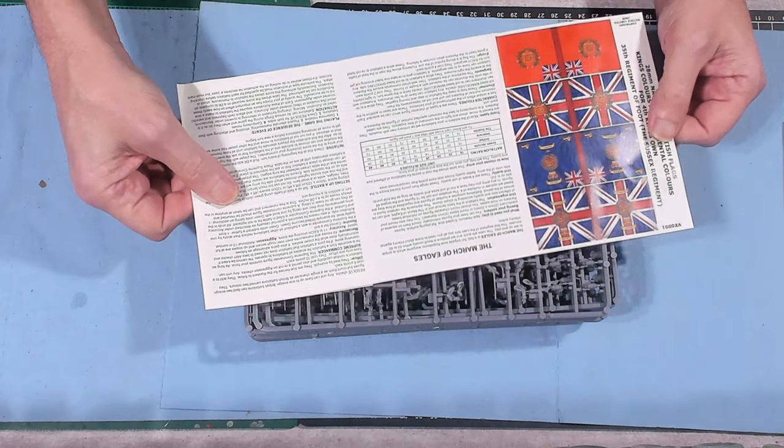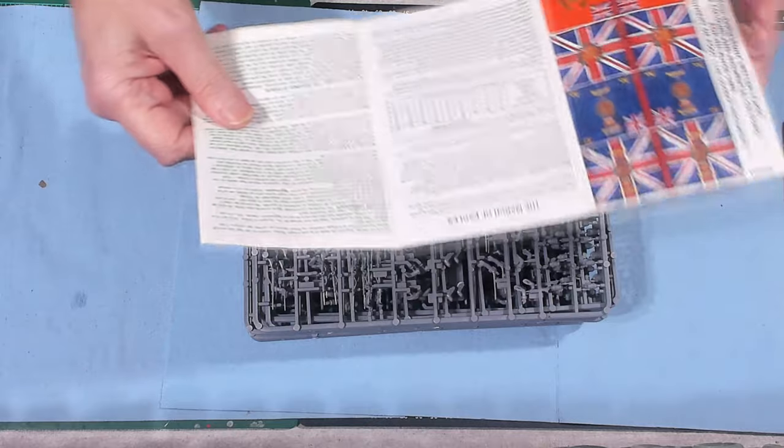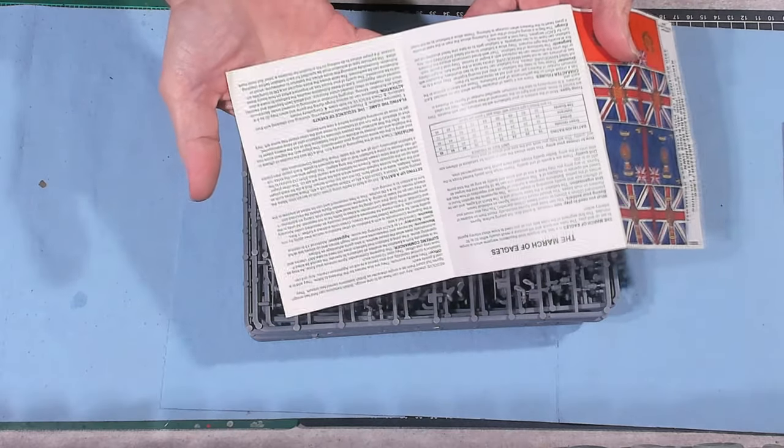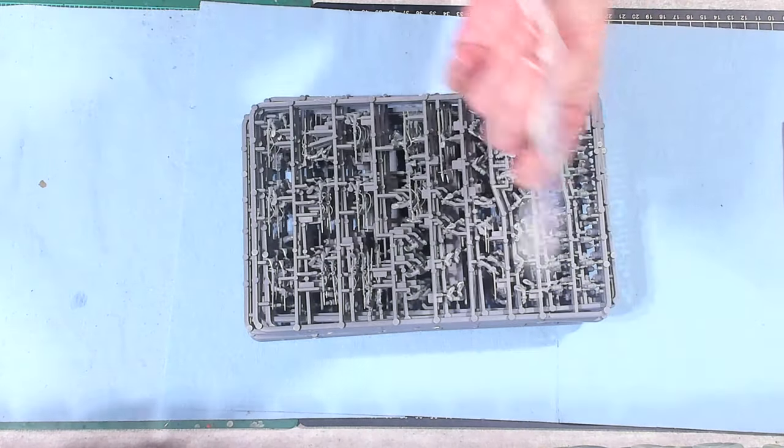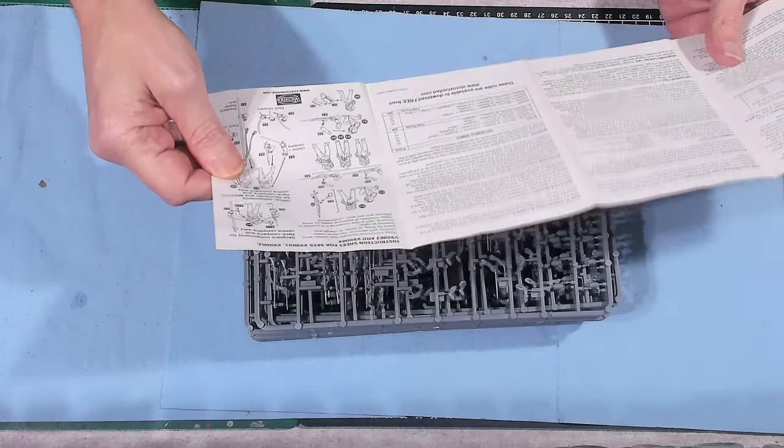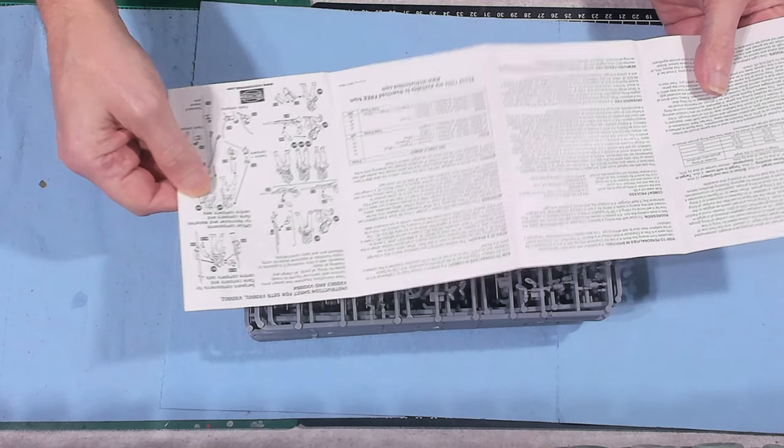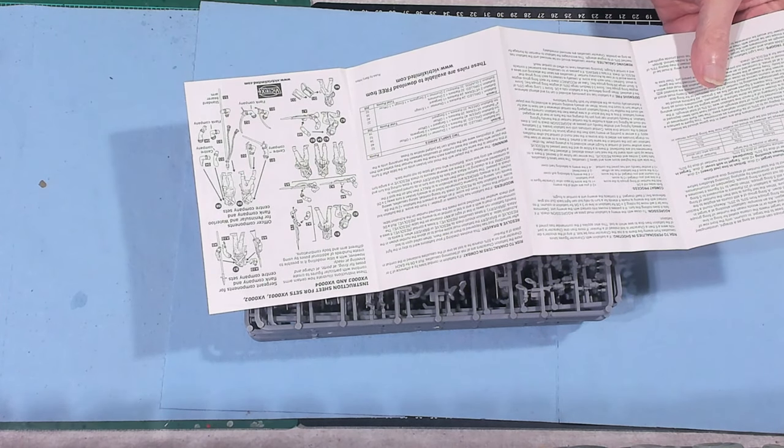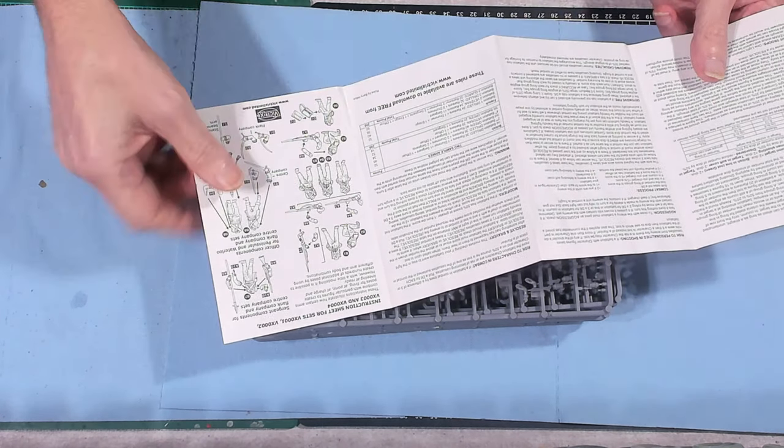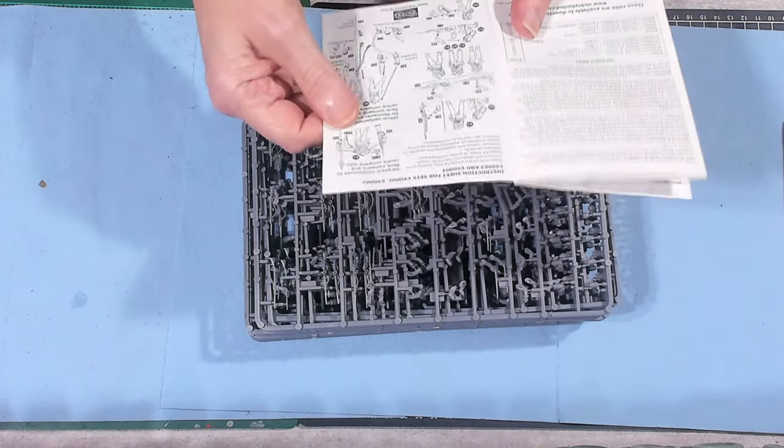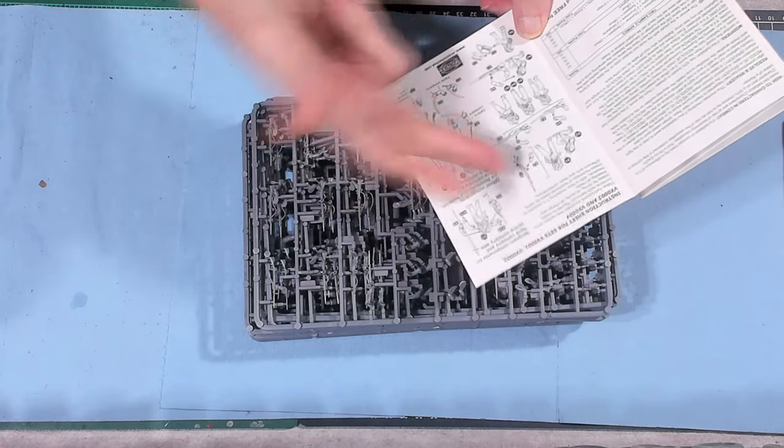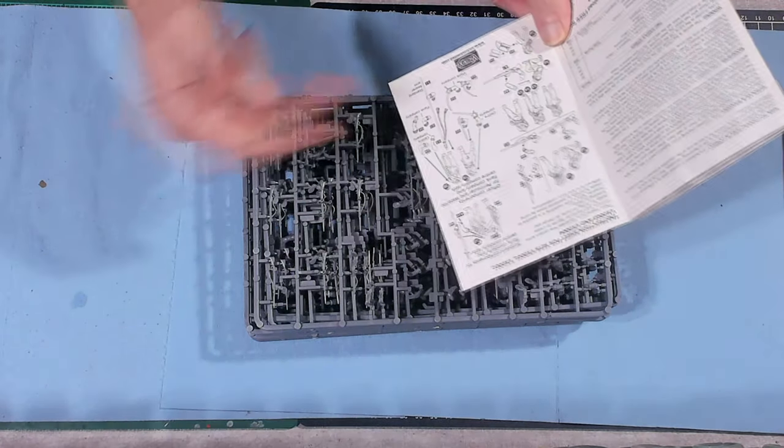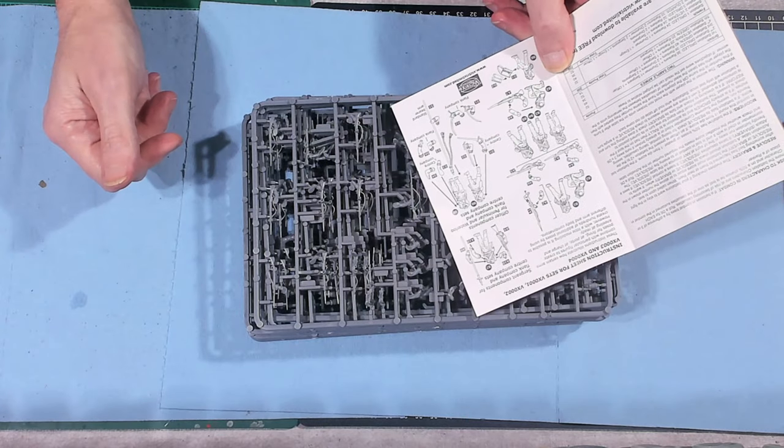And then apparently March of Eagles is a Victrix Napoleonics game that you can play using these models. I got a couple of different armies, the range of the weapons, combat processes and stuff. But I plan to use black powder. And then this is the instruction sheet on how to put the guys together.